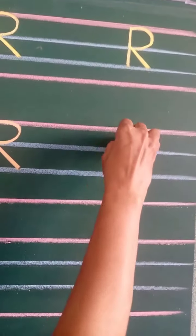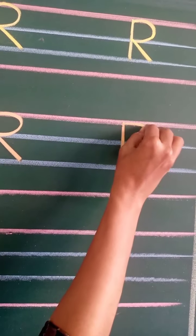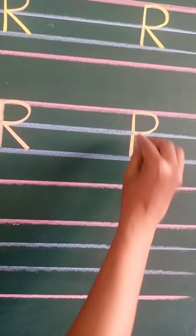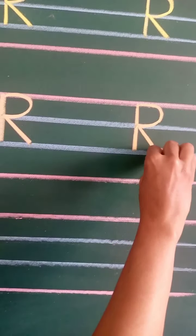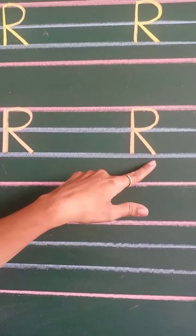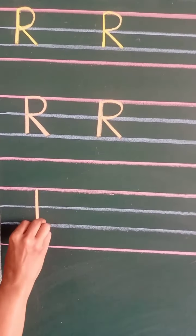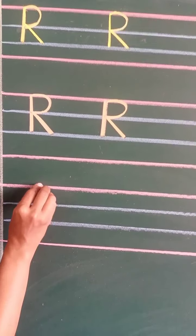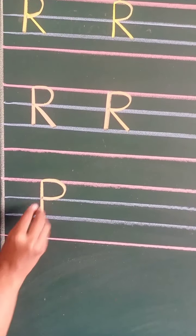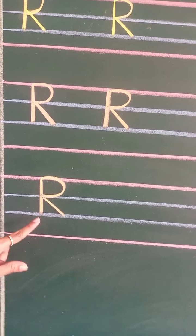Look here. Draw a straight standing line. Make a curve like this. Now from this point, draw a slanting line and touch the second blue line. This is letter R. Look here. Draw a straight standing line, make a curve like this, and draw a slanting line. This is letter R.